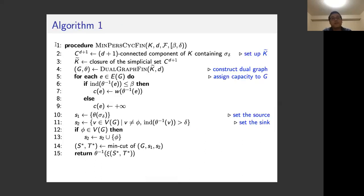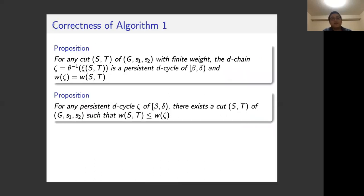The correctness of the algorithm relies on the duality. Formally, for any S-T cut of the dual graph with finite weight, the D-chain dual to this cut is always a persistent cycle of the interval, and the weight of this dual D-chain equals the weight of the cut. Conversely, for any persistent cycle zeta for this interval, there must exist a cut of the dual graph such that the weight of the cut is less than or equal to the weight of the cycle. From these two propositions, taking the minimal cut always gives the minimal persistent cycle.